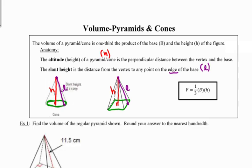Now that we know a little bit about the anatomy of these figures, let's talk volume. To find the volume of either the pyramid or the cone, we're going to use the formula volume is equal to one-third times capital B, which represents the area of the base, times the height of the figure.